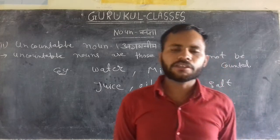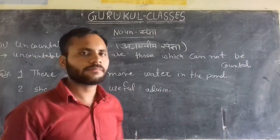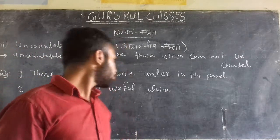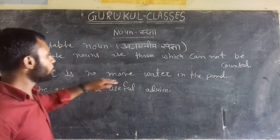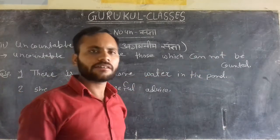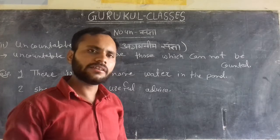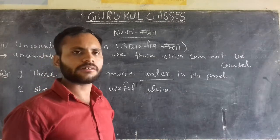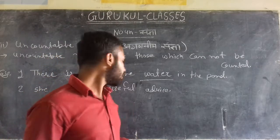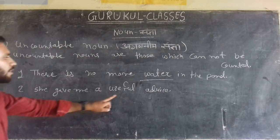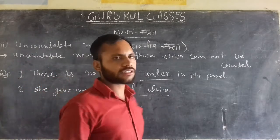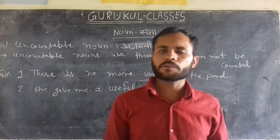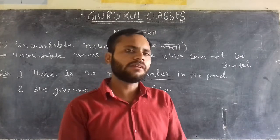Take your friends, look at the sentence: 'There is no more water in the pond.' This water is uncountable, so we can't count it. Another example: 'This is useful advice.' Here, advice is an uncountable noun.